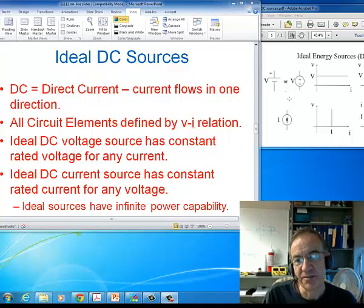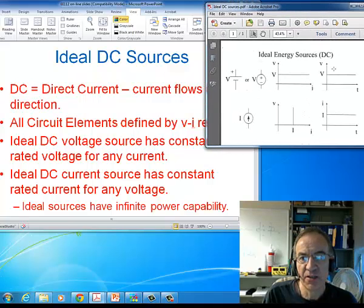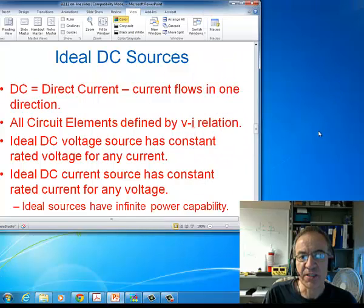Of course, a real source, an actual source has some power limitation that we call the power rating that can't be exceeded. But, again, we're talking ideal in this case. Now, over to the right on this diagram, this just shows that for a DC voltage and a DC current, that if you look at those quantities versus time, that they're constant in time. Now, there are a whole different category of sources.